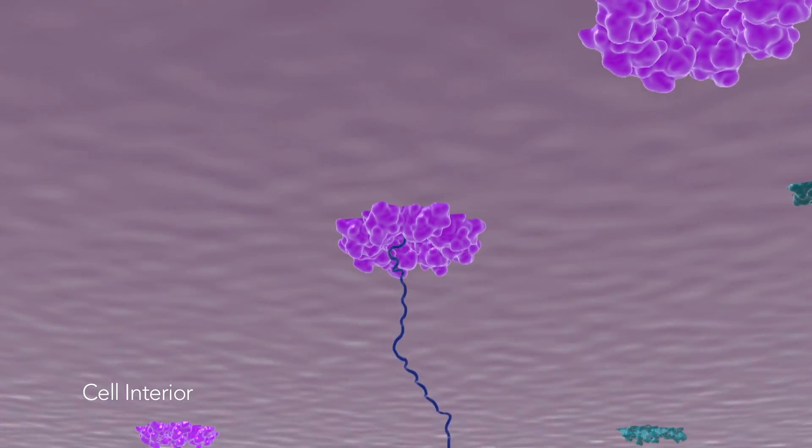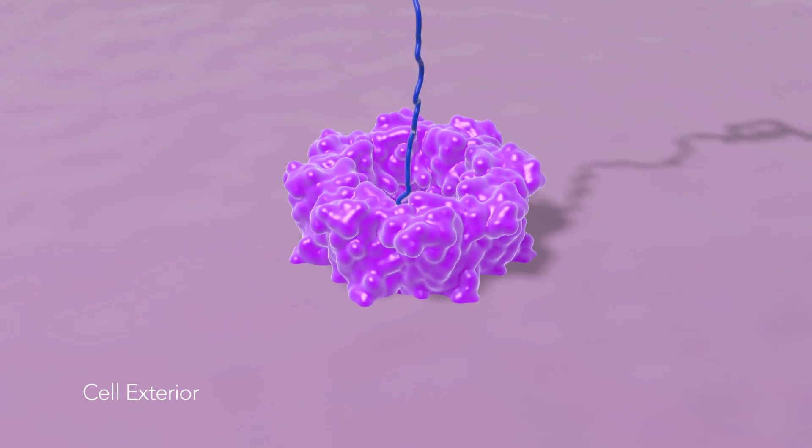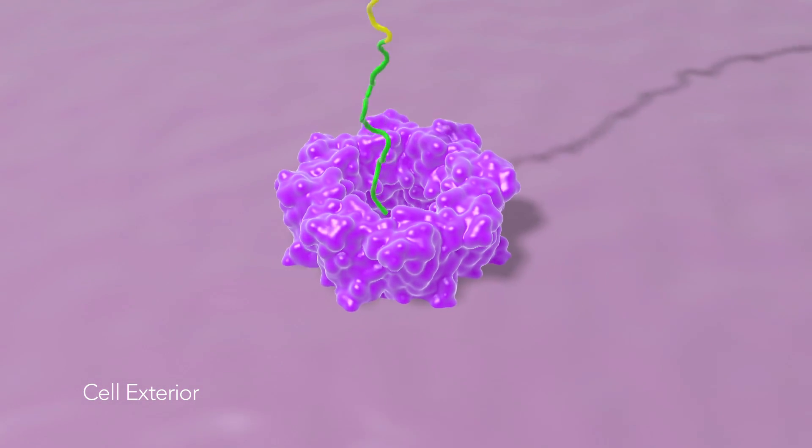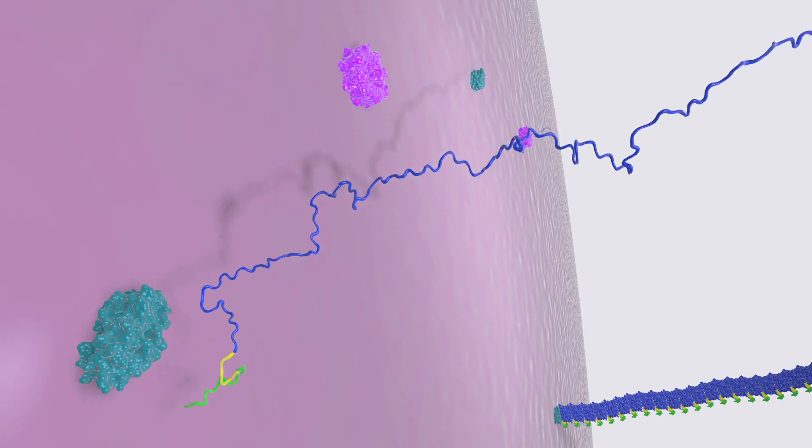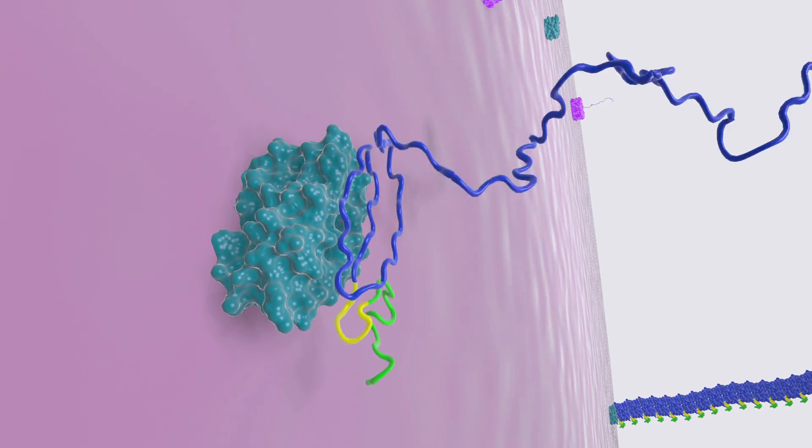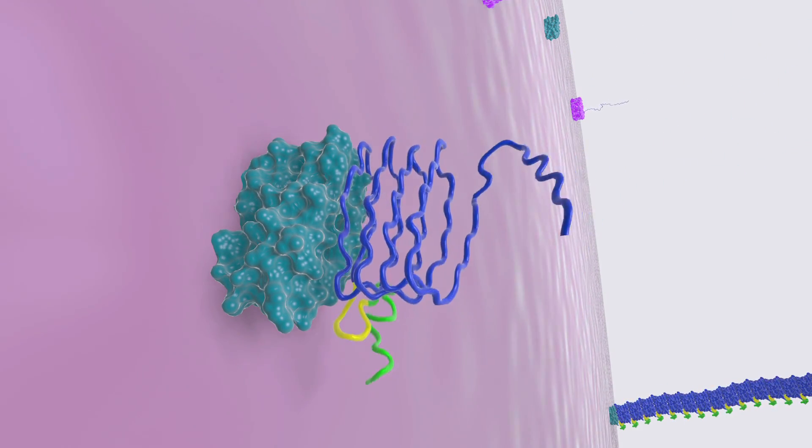The cells produce this protein within themselves and then secrete it through various biosynthetic machinery components into the extracellular space. It then is nucleated at the cell surface to form something called amyloid fibers, which are essentially these self-assembled protein structures that form fibrils.